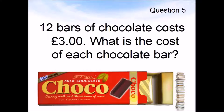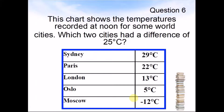Question 6. This chart shows the temperatures recorded at noon for some world cities. Which two cities had a difference of 25 degrees Celsius? Pause the video until you are ready for the answers.